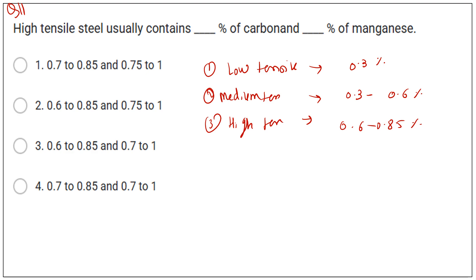And this 0.6 and 0.85% is given in the first and second option. But for the manganese, the percentage is 0.7 to 1% in case of high tensile steel. So third option is correct here.